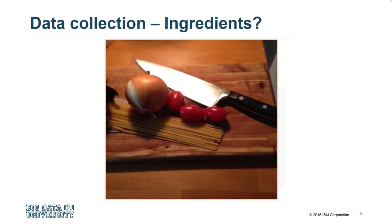After the initial data collection is performed, an assessment by the data scientist takes place to determine whether or not they have what they need. As is the case when shopping for ingredients to make a meal, some ingredients might be out of season and more difficult to obtain, or cost more than initially thought. In this phase, the data requirements are revised and decisions are made as to whether or not the collection requires more or less data.